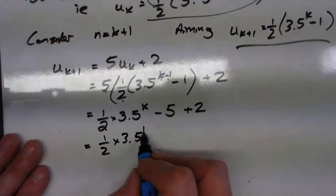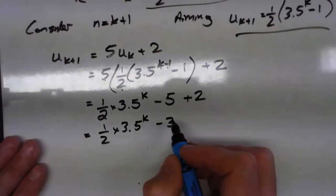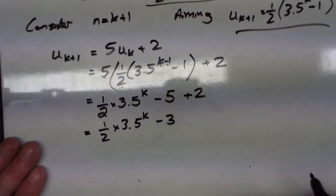So, all together now, I've got most of it, haven't I? Look, I've got the half, 3, 5 to the k, but here I've got minus 3, which I don't really want. So where have I gone wrong?